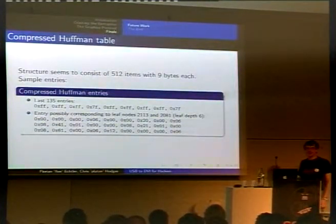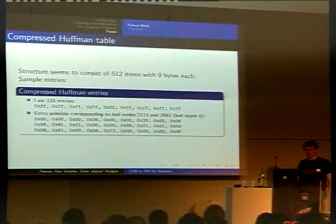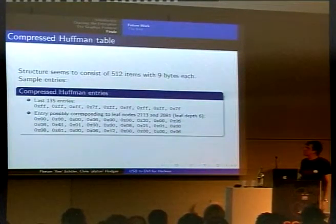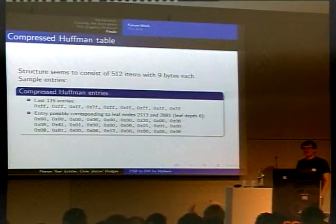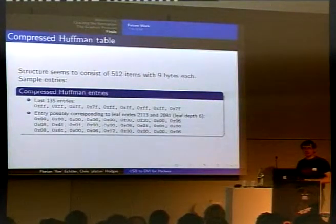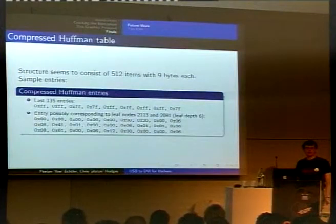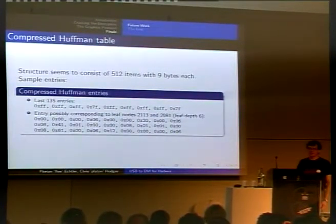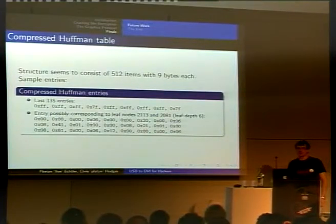And it looks like this record somehow contains pointers to the leaf values. And these maybe contain the bit depth. But exactly how these are interrelated, we haven't yet figured out. So this is, of course, not strictly necessary to operate the device, because we do know the Huffman table. We can keep it in memory. It's just around 320 kilobytes. However, for a driver, for example, for a kernel driver, it would still be nice to have the compressed version, which is uncompressed on the fly.